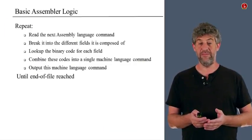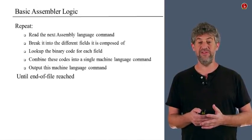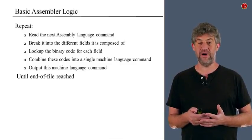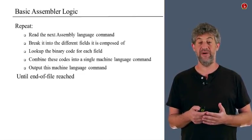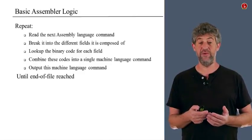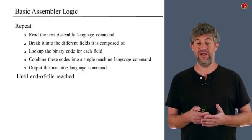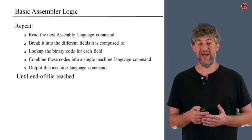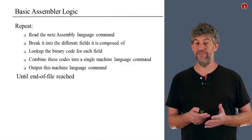The assembler program is really a very simple program. It does the following basic loop repeatedly: it reads one assembly language command from the input, breaks it into its parts, translates each part to binary in a unique way specified by the language, puts the binary parts together to get the machine code equivalent to that assembly command, outputs it, and moves on to the next command — translating one command after another without having to remember anything from the history.